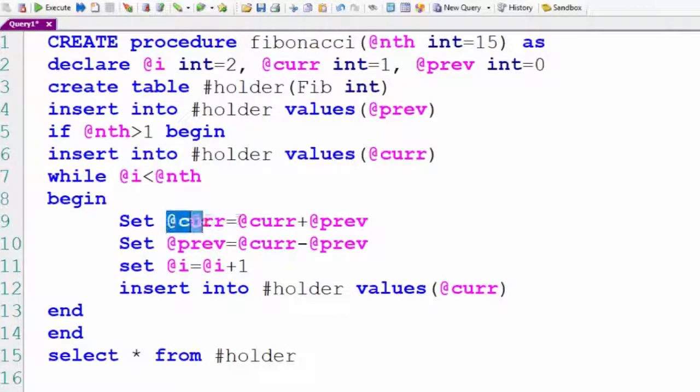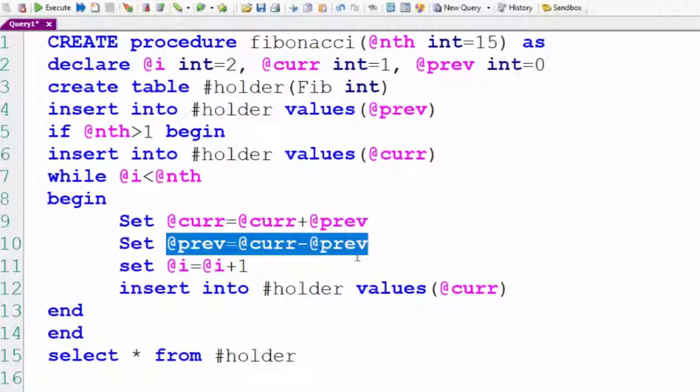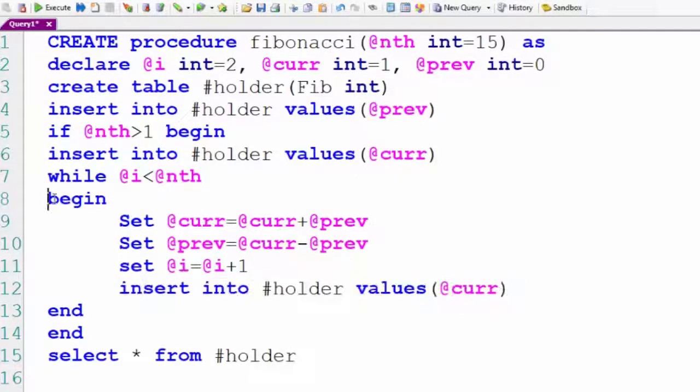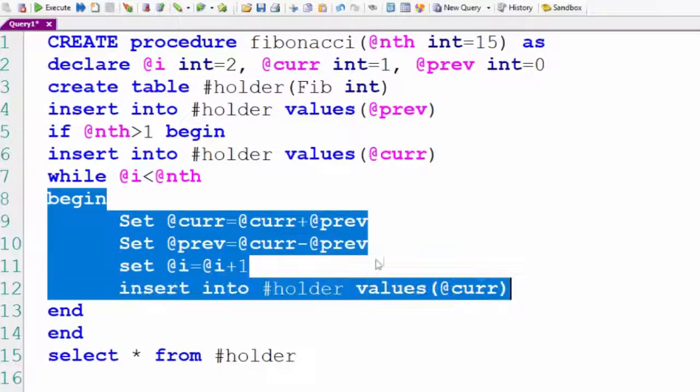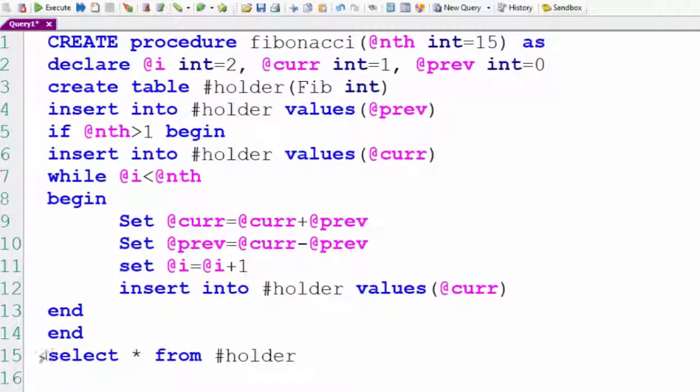We'll set @current equal to @current plus @previous. We'll set @previous equal to @current minus @previous. We'll set @i equal to @i plus one, and we will insert that value. We will continue to loop until we hit our nth value, which in this case we want fifteen of these Fibonacci numbers.